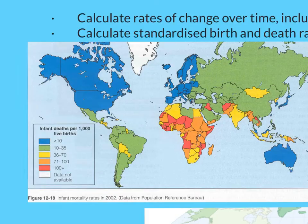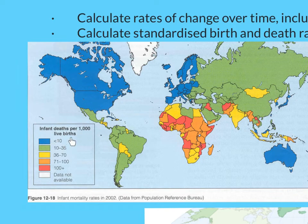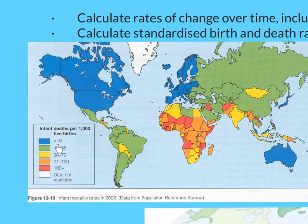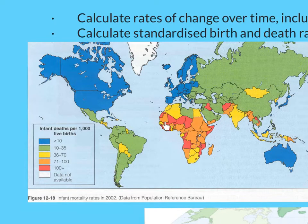First of all we've got this map of the world from 2002, and notice that these are the infant mortality rates — infant deaths per 1,000 live births. This end shows the least deaths, so most children survive, whereas up here there are at least 100 per 1,000, meaning at least 1 in every 10 babies born alive is not making it.